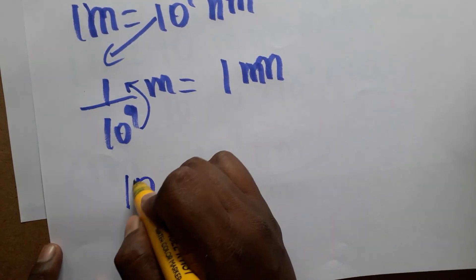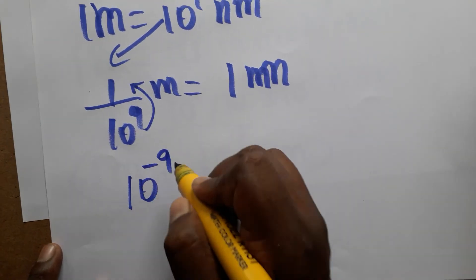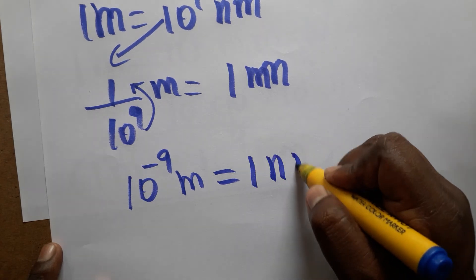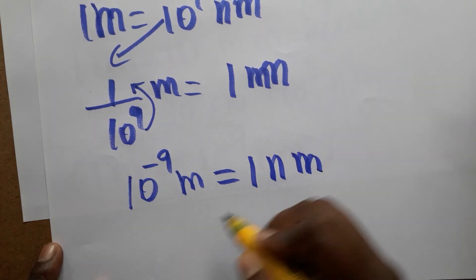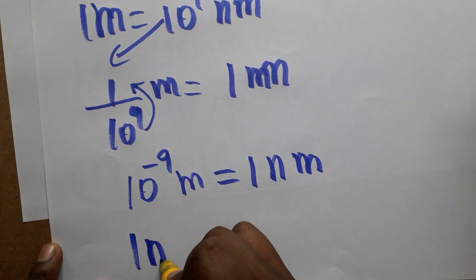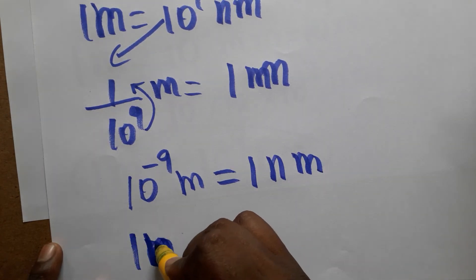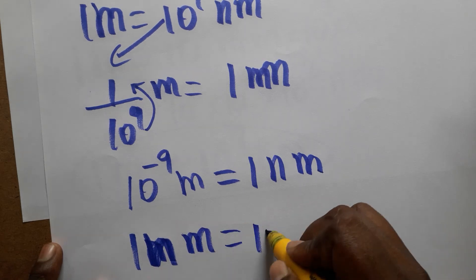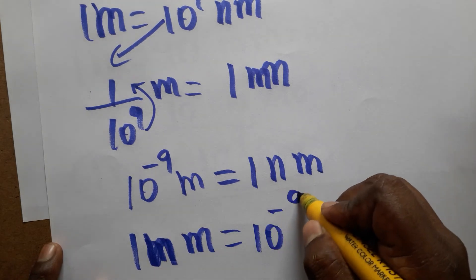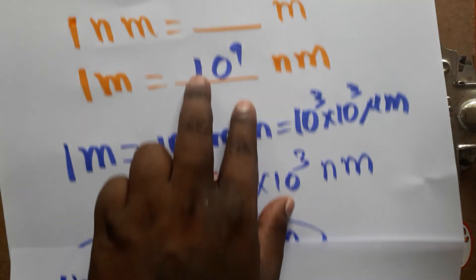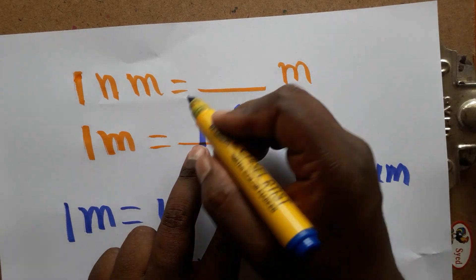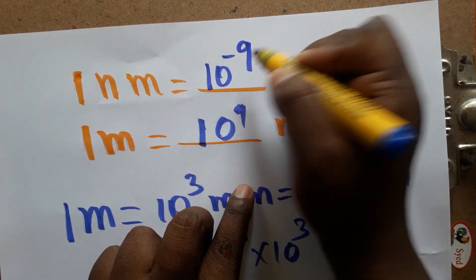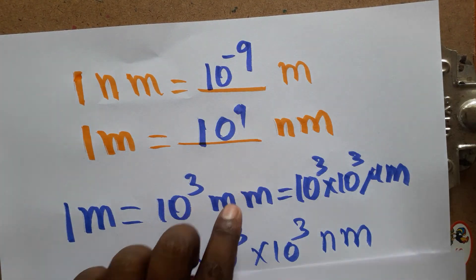Therefore, 10⁻⁹ meters is equal to 1 nanometer. So 1 nanometer is equal to 10⁻⁹ meters. We have now derived both results.